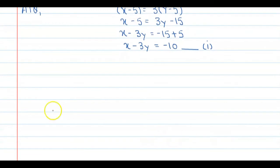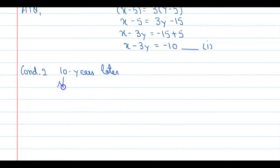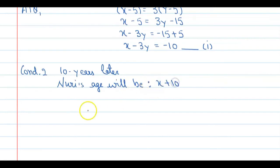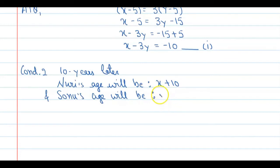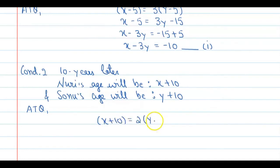Now go to condition number 2: 10 years later. If today Nuri's age is X, then 10 years later Nuri's age will be X plus 10. Similarly, Sonu's age will be Y plus 10. According to the question, X plus 10 is equal to double of (Y plus 10), because 10 years later Nuri's age will be twice Sonu's age.